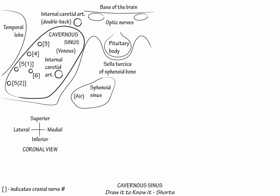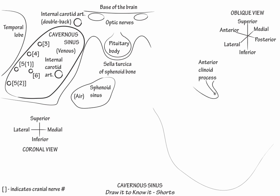Now we will draw the cavernous sinus in oblique view. Begin with our planes of orientation, and then draw the anterior clinoid process. Medial to it, label the optic canal, within which runs the ophthalmic branch of the internal carotid artery.